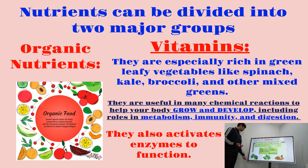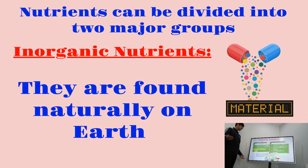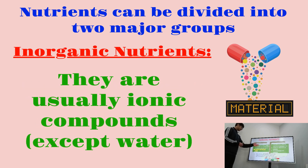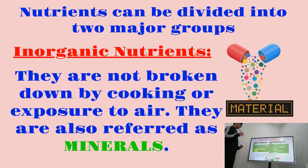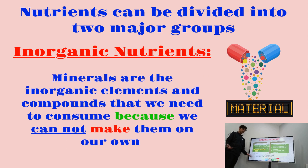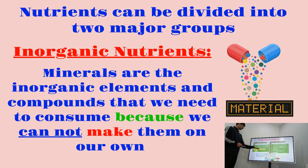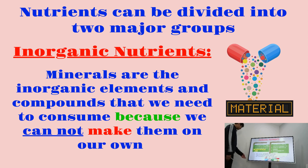Now let's go over inorganic substances. Inorganic nutrients are usually found naturally on earth; they are usually ionic compounds or elements, except for water, and they do not contain carbon atoms. They are also not broken down by cooking or exposure to air, and they are often referred to as minerals — inorganic elements and compounds that we need to consume because we cannot make them on our own.